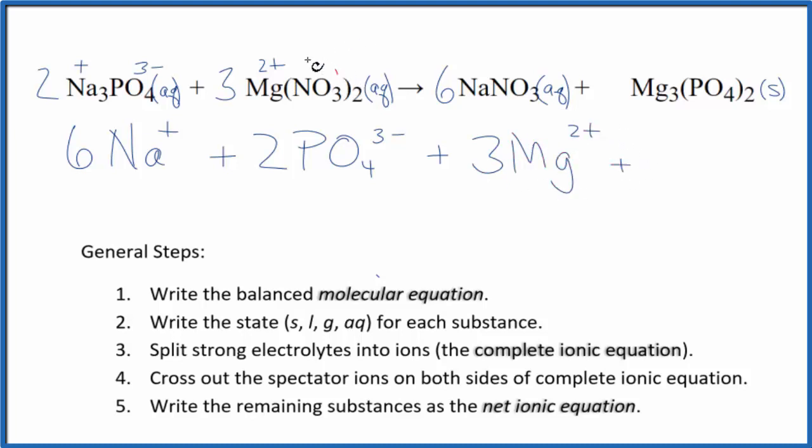And then the nitrate. Nitrate, this whole thing always has a 1 minus ionic charge. We have 2 nitrates times the 3, so 6 nitrate ions. And these are the reactants in our net ionic equation.